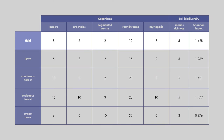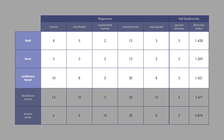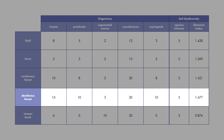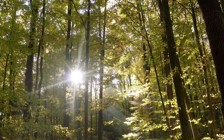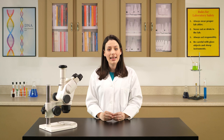Even though the soil from the field, lawn, coniferous forest, and deciduous forest all have the same species richness, the soil from the deciduous forest has a higher Shannon Index. Since the soil from the deciduous forest has a high species richness and the highest Shannon Index, we conclude that the deciduous forest ecosystem has the highest biodiversity and the greatest potential to support life.